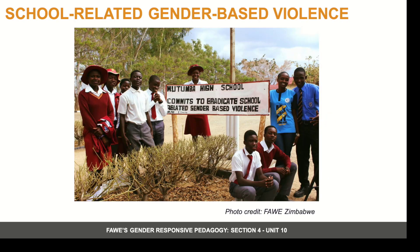School-Related Gender-Based Violence, SRGBV, seriously undermines attempts to achieve gender equality in education and is a violation of human rights, which are recognized under both national and international laws. According to UN Women, more than 246 million children are subjected to gender-based violence in or around schools every year. SRGBV can significantly hinder students' learning, diminish their academic performance, and oftentimes force them to drop out due to trauma, fear, shame, humiliation, sexually transmitted infections (STI) such as HIV and AIDS, and/or unwanted pregnancy.